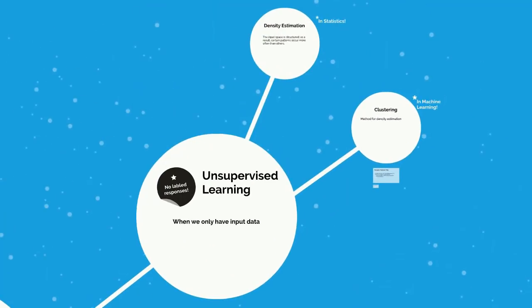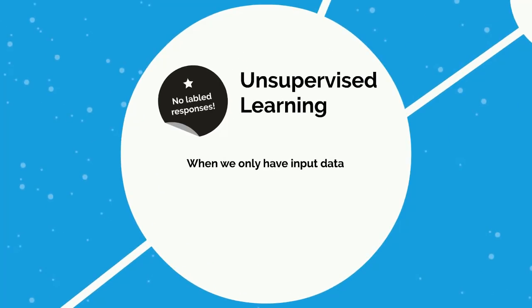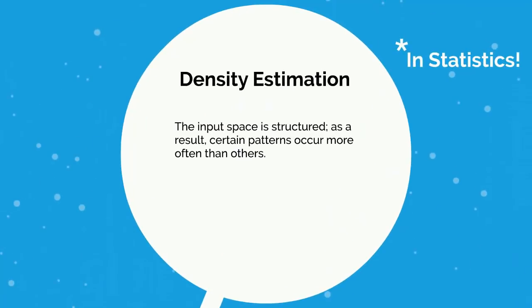Let's talk about unsupervised learning. This is a much different scenario than supervised learning — it's really its counterpart. Unsupervised learning is characterized by the lack of output data; we have no labeled responses. We only have the input data and we don't necessarily know what we're looking for. However, we do have a goal: to find regularities in the input. We assume there is a structure to the input space such that certain patterns occur more often than others, and we want to see what generally happens and what does not.